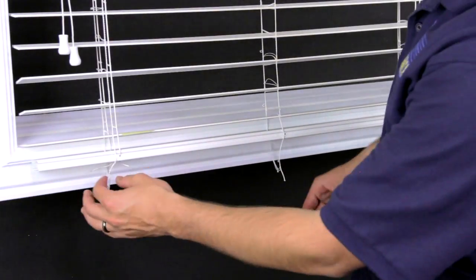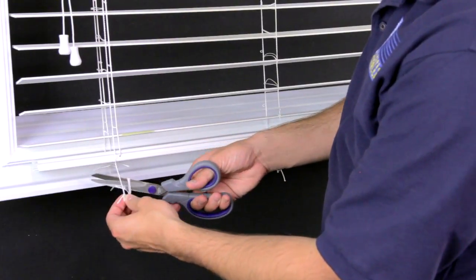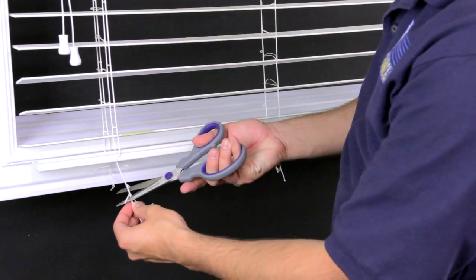Cut the ladder strings off evenly about 2 inches below the bottom rail. Tuck these into the hole on the underside of the bottom rail and insert the bottom rail buttons.